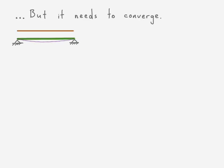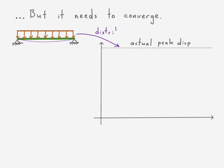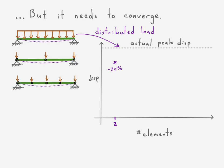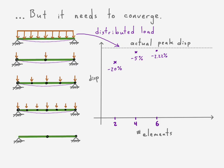For an example, let's go ahead and show this, which is just an even distributed load case, and we'll do a little convergence plot. This dotted line is the actual peak displacement using mechanics and materials equations. Using our static equivalent load, just two elements underestimates by 20% — that's quite a lot. With four elements we're at 5% error, six elements gets us to about 2% off, and with eight elements we're only 1% off. So it's okay, but it just takes time to converge.